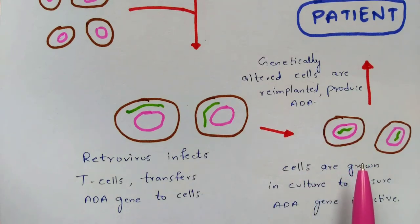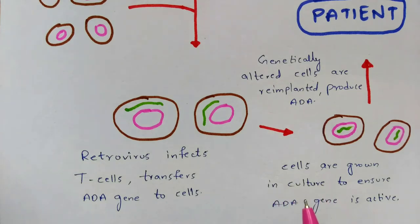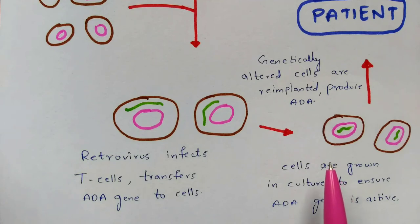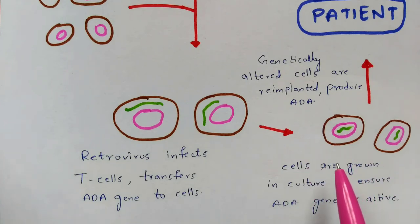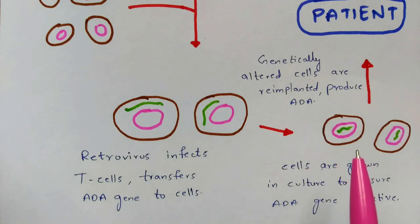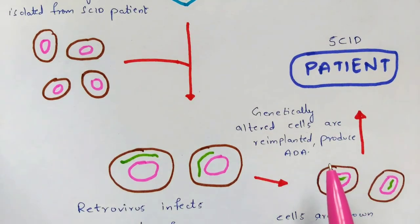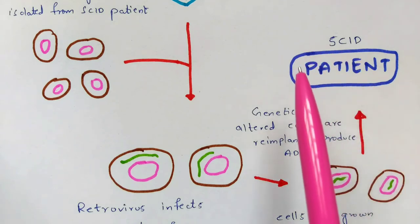Once the ADA gene enters the nucleus of the T-cells, the cells are cultured. In the culturing process, cells are placed in a petri dish with added nutrients. By absorbing the nutrients, the cells proliferate — they divide by mitosis — and multiply in number. These proliferated cells are then ready to be implanted into the patient.